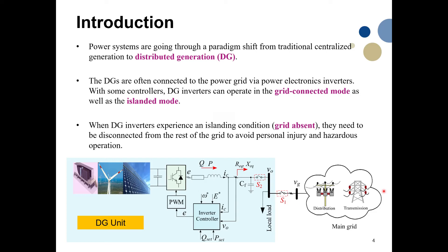Power systems are going through a paradigm shift from traditional centralized generation to distributed generation. Distribution generation units are often connected to the power grid via power electronics converters with controllers. The distribution generator inverter can operate in grid-connected mode and also in islanded mode, supplying power to local loads only. When the DC inverter experiences an islanding condition, it needs to be disconnected from the rest of the grid by tripping the circuit breaker.